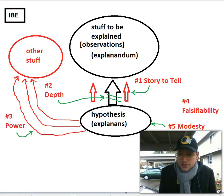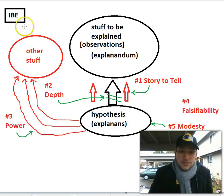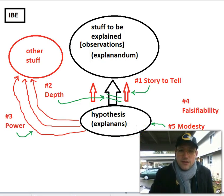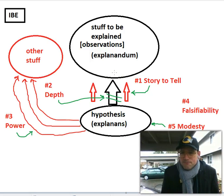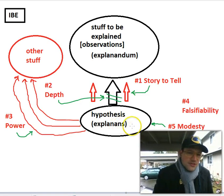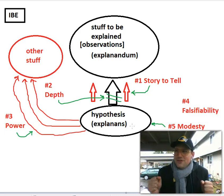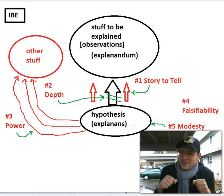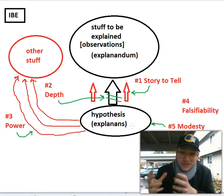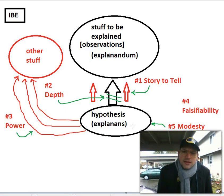Modesty is in interesting relationship with depth and power. The idea is that a stronger explanation is one that doesn't claim more than it needs to in order to get the stuff explained. If depth worried about sufficiency — maybe not giving enough — modesty is worrying about falling off the other side: adding too much information, more than is needed. The logic: if we're citing a claim's explanatory usefulness as reason for believing it's true, then anything in the hypothesis that isn't contributing useful explanatory work — we don't have any reason to believe that part.